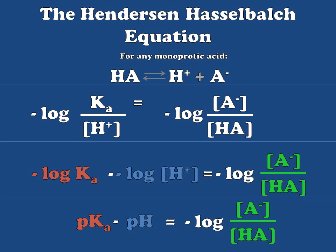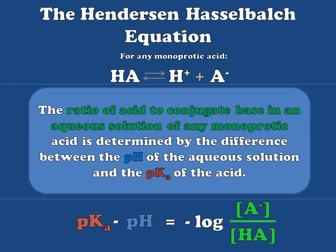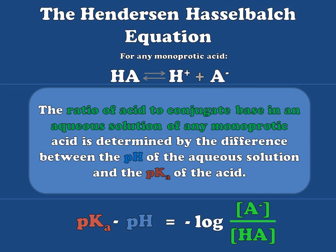This is the Henderson-Hasselbalch equation. The Henderson-Hasselbalch equation tells us that the ratio of acid to conjugate base in any aqueous solution for a monoprotic acid is determined by the difference between the pH of that solution and the pKa of the acid.